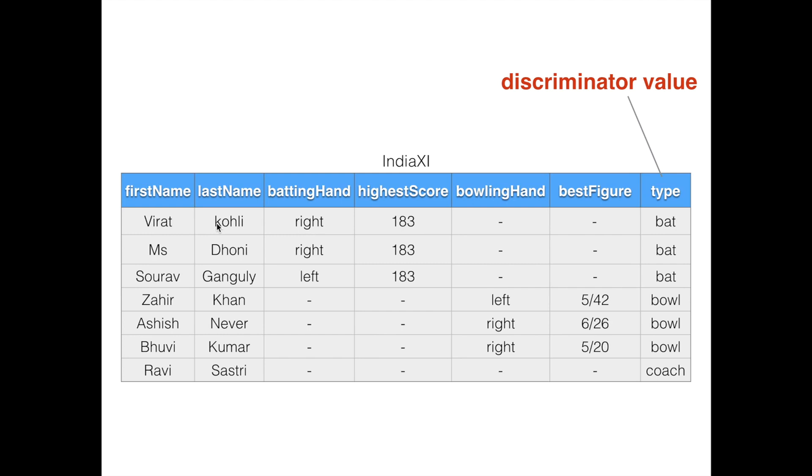This is a simple example which helps us understand Table Per Class Hierarchy in Hibernate. Now let's understand the same example programmatically and build it step by step. In the next tutorial, we're going to code this same example in Eclipse. Subscribe to my channel so you get a notification when I upload that tutorial. See you in the next video — till then, happy coding!